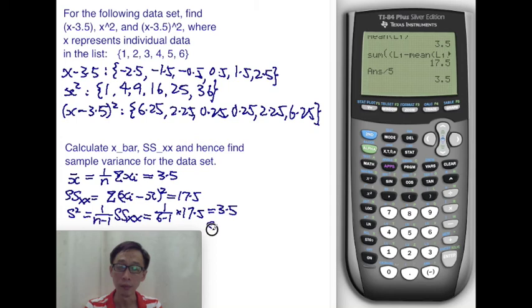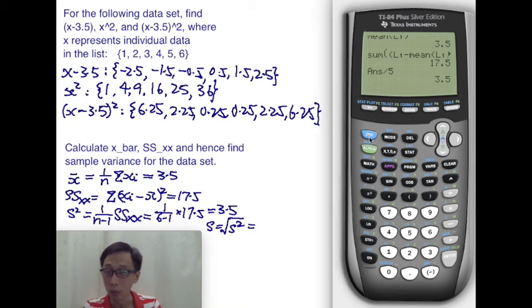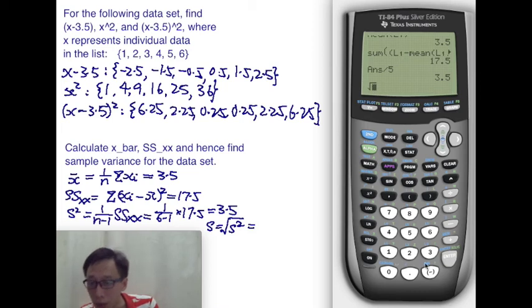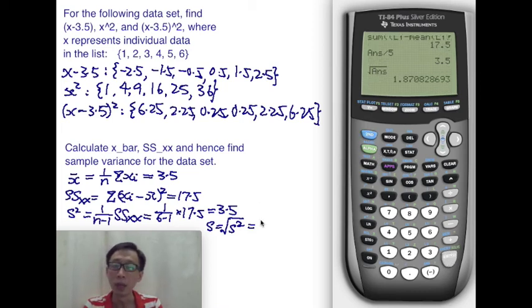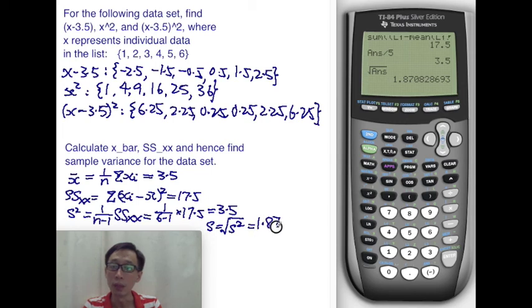And therefore, sample standard deviation is going to be square root of the sample variance. Let's find the square root of, we're going beyond what the question wants, but that's okay. So trying to verify something here. To get 1.8708.